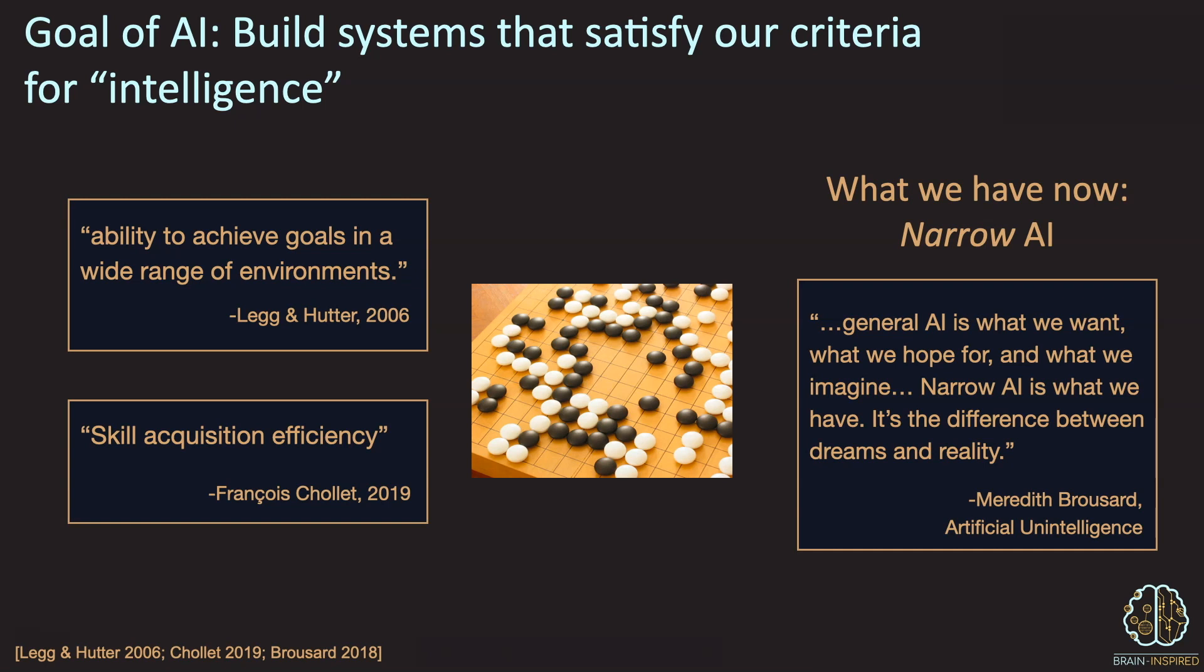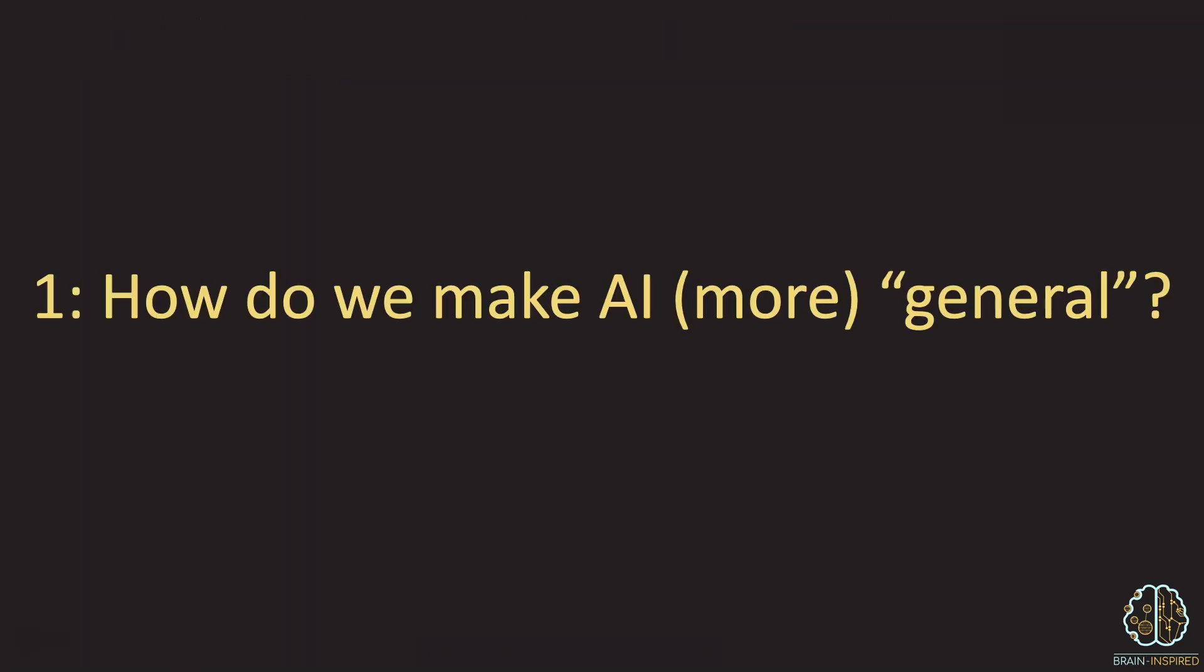As Meredith Broussard puts it, General AI is what we want, what we hope for, and what we imagine. Narrow AI is what we have. It's the difference between dreams and reality. So the first open question is the focus of a ton of research. And that is, how do we make AI general, or more general?